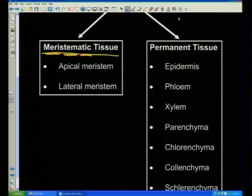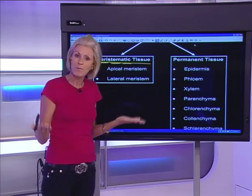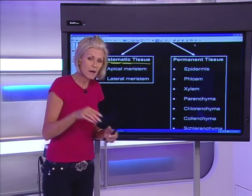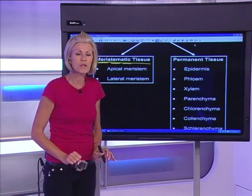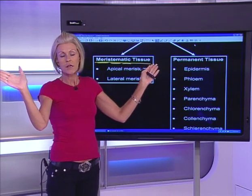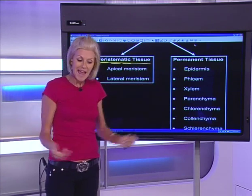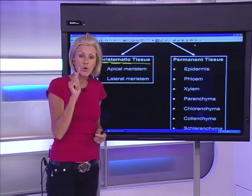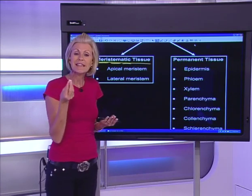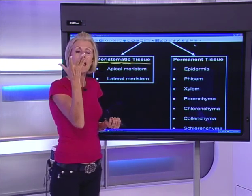Meristematic tissue: now where do we have growth in a plant? The roots grow down into the soil, the stem grows up, side branches grow sideways. So the growing points are at the tips of all the stems and the tips of the roots. And in springtime, what grows into those beautiful flowers? Little buds — so you'll have meristematic tissue in those little buds as well.